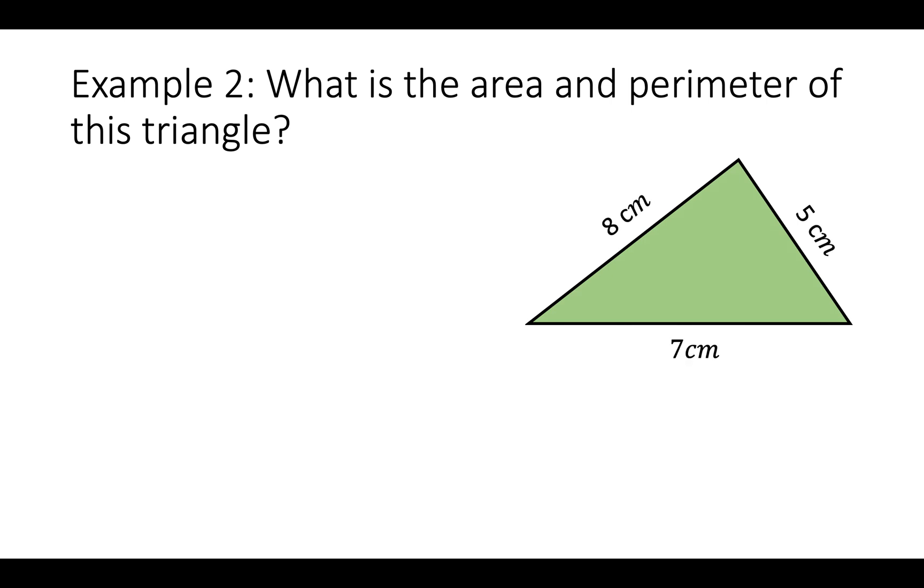What is the area and perimeter of this triangle? Where the height is 4cm. For the area we do a half the base times the height. Which is half times 7 times 4. 7 times 4 is 28. And then half it is 14cm.